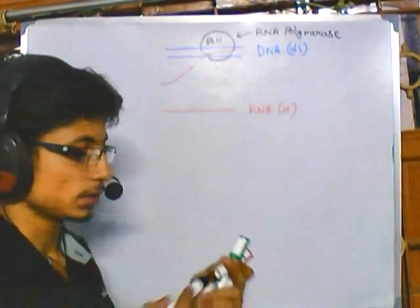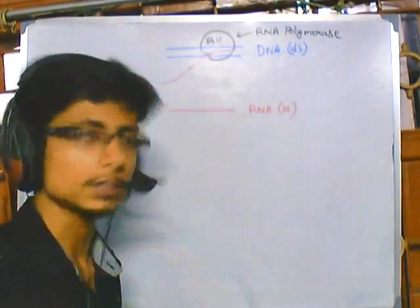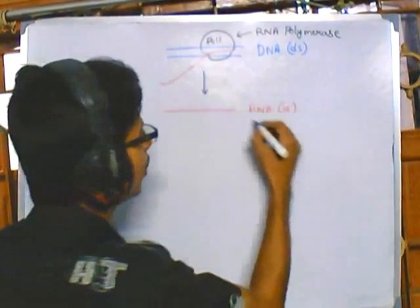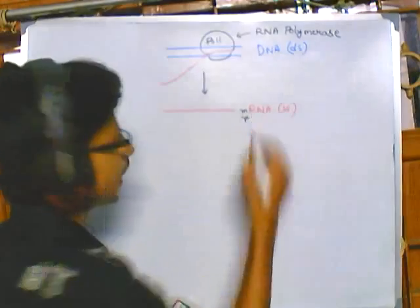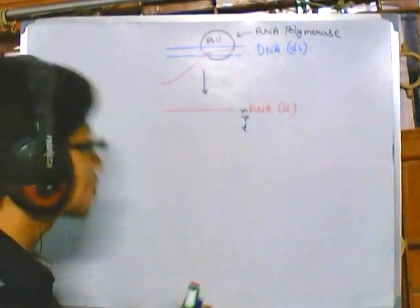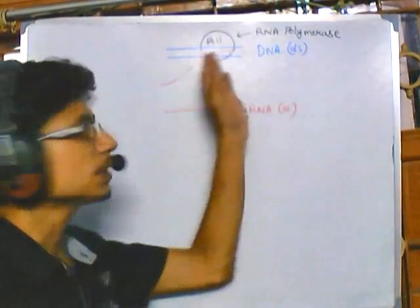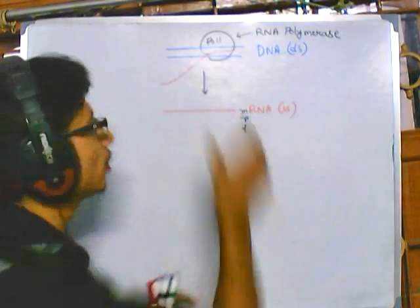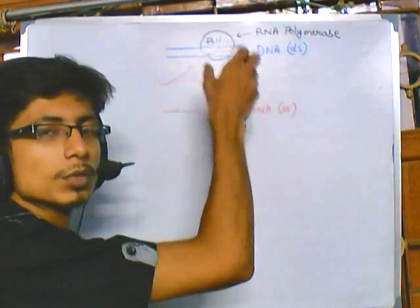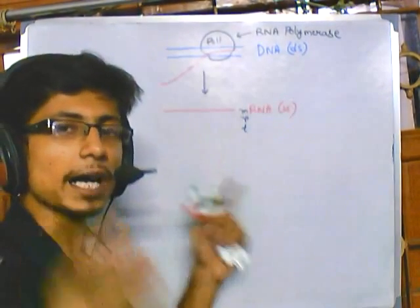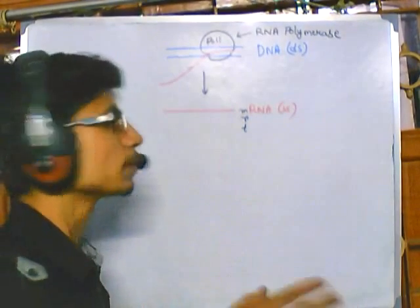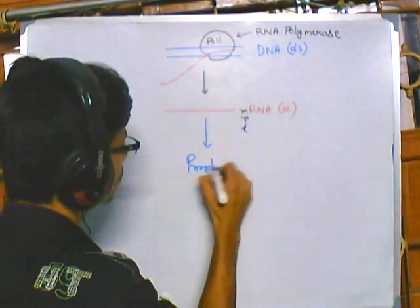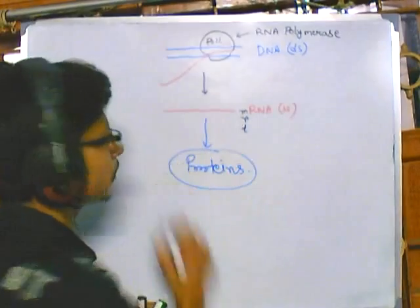RNA polymerase is common to both prokaryotes and eukaryotes. The RNA produced can be of variable types: mRNA (messenger RNA), rRNA (ribosomal RNA), or tRNA (transfer RNA). The DNA carries sequences which are transcribed into RNA, and our actual goal is to produce proteins.